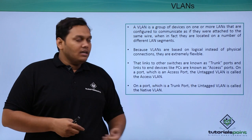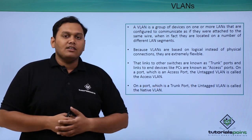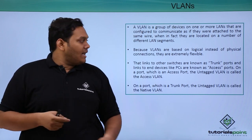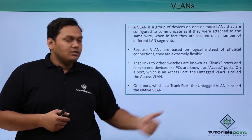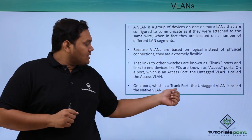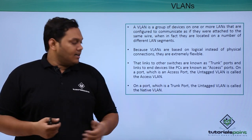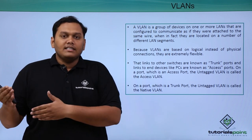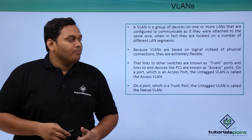On a port which is an access port, the untagged VLAN is called the access VLAN. The access VLAN is an untagged VLAN on the access port. On a port which is a trunk port, the untagged VLAN is called the native VLAN. The native VLAN is an untagged VLAN on a trunk port.